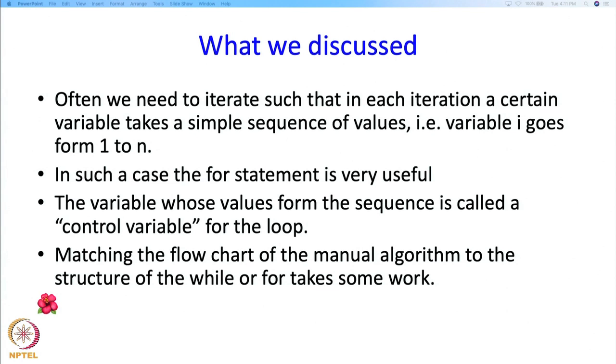So what did we discuss in this segment? We said that many times we need to iterate such that in each iteration a certain variable takes a simple sequence of values — for example variable i goes from 1 to n. In such cases the for statement is very useful. The variable whose values form the sequence is called the control variable. Essentially that sequence is driving what is happening in each iteration. We also noticed that matching the flowchart of the manual algorithm to the structure of the while or for takes some amount of work. So we will stop here for this segment.